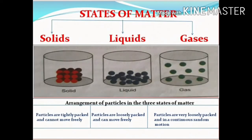Solids, liquids, and gases are the three states of matter. Ice and wood are examples of solids. The particles in a solid are close-packed and arranged in a regular structure. The intermolecular bonds are very strong in solids — that is, particles are tightly packed.